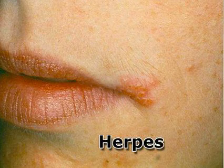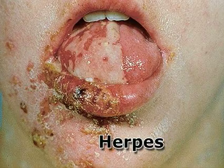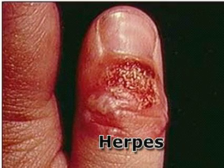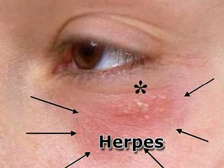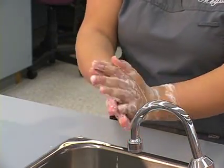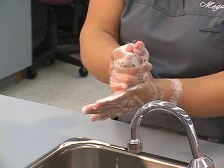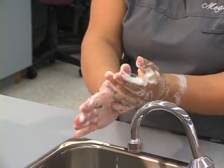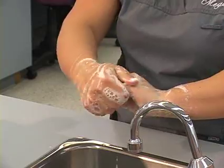If adequate infection control procedures are not practiced, a cycle of cross-contamination may occur, exposing the oral health care professional and patient to the risks of infection and illness. Handwashing is considered the single most important procedure in preventing cross-contamination.